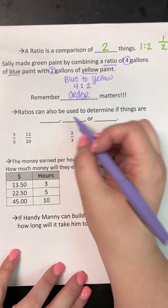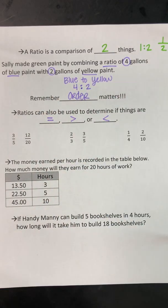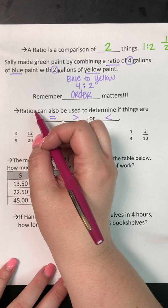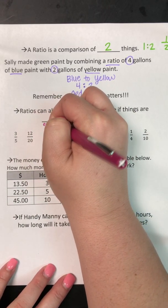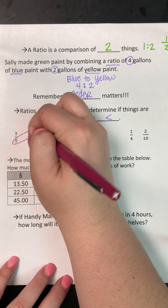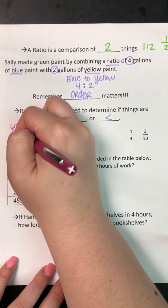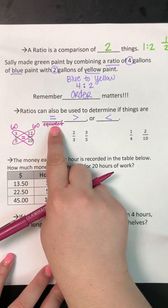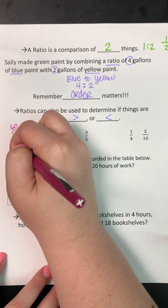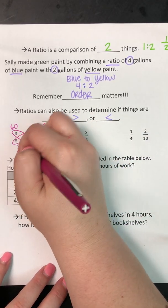Ratios can also be used to determine if things are equal, greater than, or less than. A lot of times if we see the word ratio and they're asking for something that's equivalent — equivalent means equal — we can butterfly corner to corner. Five times 12 is 60, and 20 times 3 is 60, so these are equal fractions; they are equivalent. You can do the same thing if they were ratios written as 3 to 12 and 5 to 20 — it's the same process.